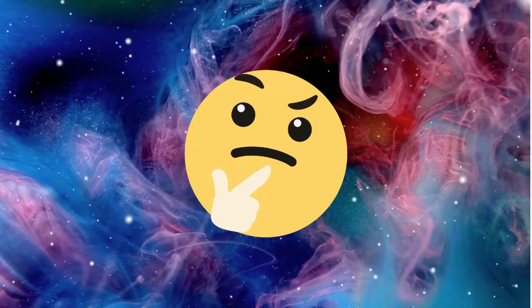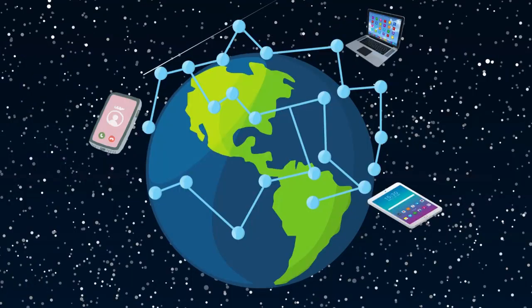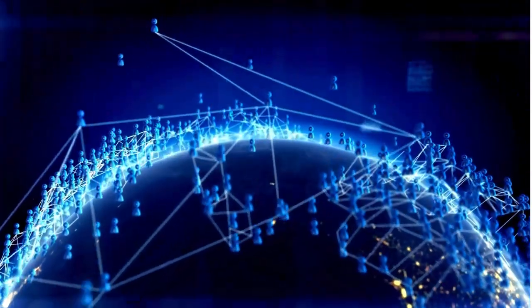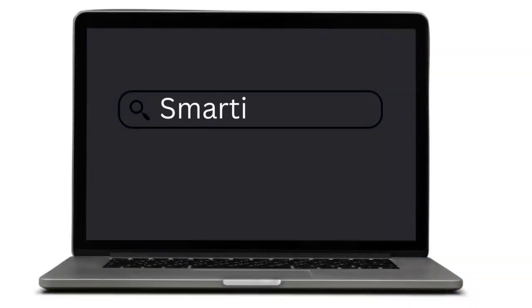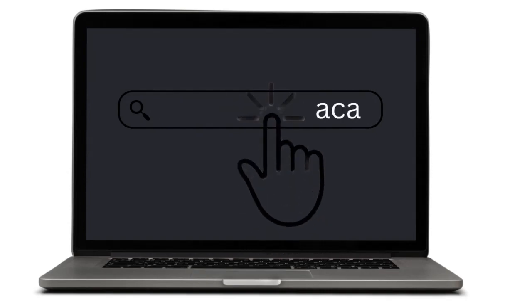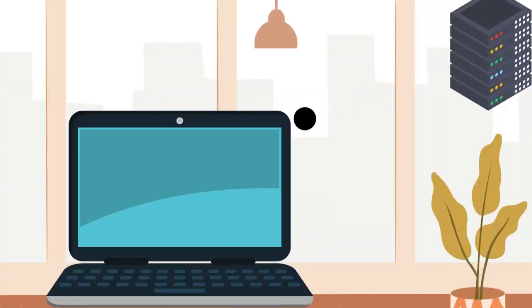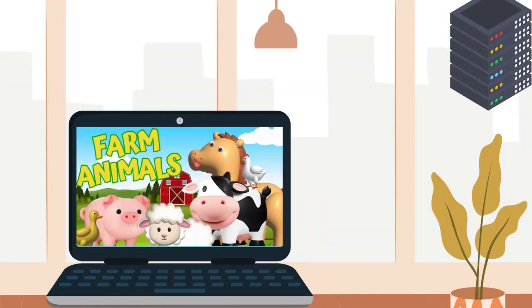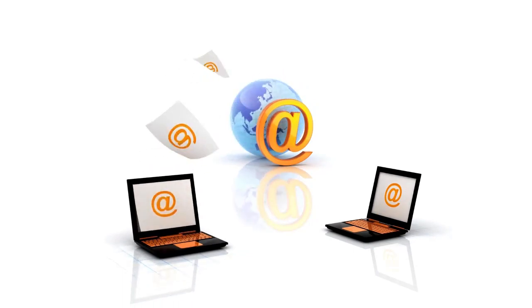So let's start at the beginning — how do we connect to the internet? It's like a big web that connects computers, phones, tablets, and other devices all around the world. When you click on a link or type in a website address, your device sends a request to a special place called a server. The server then sends back the information you asked for, and voila — you're connected to the internet!